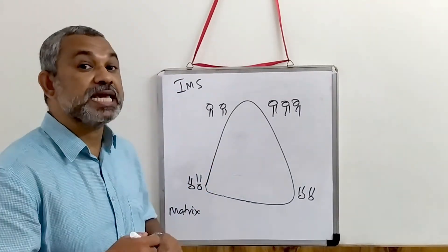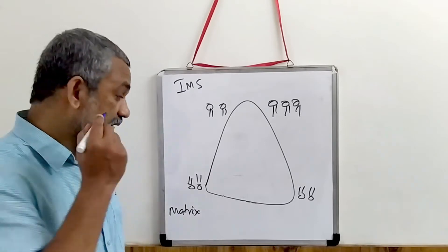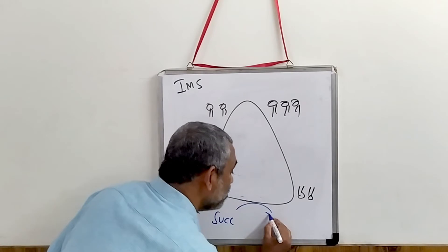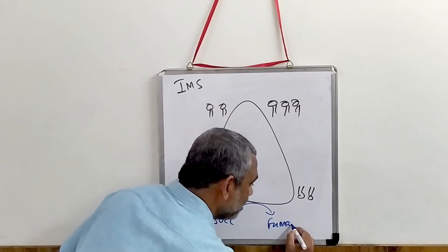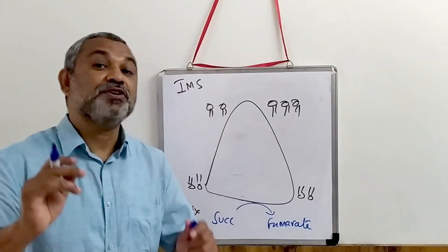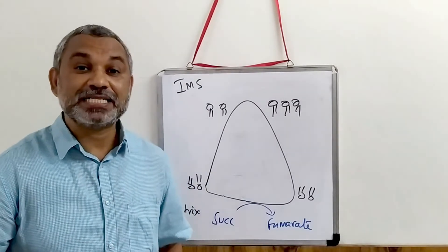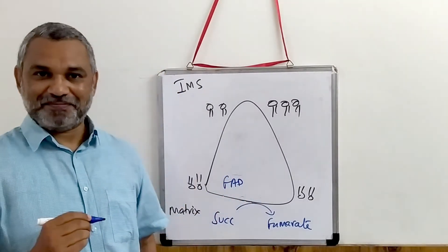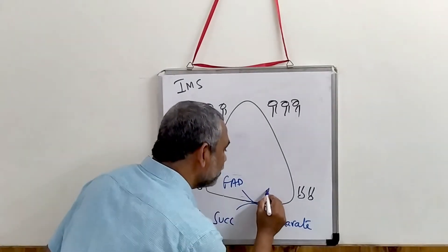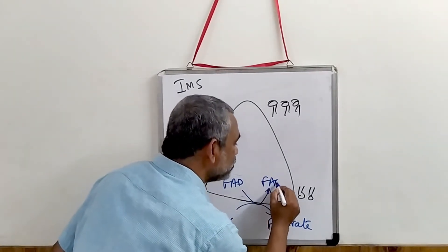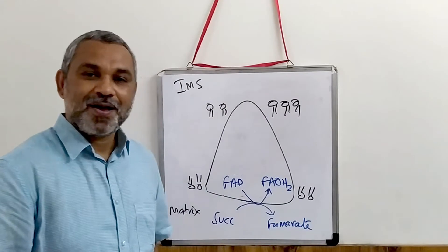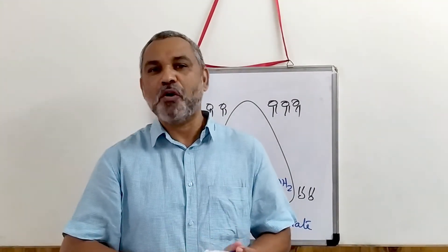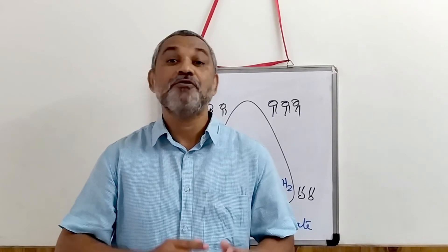The first reaction is the conversion of succinate to fumarate. The coenzyme of this particular enzyme is FAD, and in this reaction FAD gets converted to FADH2.